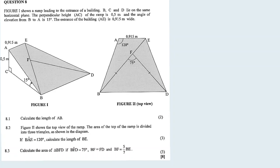So let's look at question 8. Figure 1 shows a ramp leading to the entrance of a building. B, C, and D lie on the same horizontal plane. The perpendicular height AC of the ramp is 0.5 meters, and the angle of elevation from B to A is 15 degrees. The entrance of the building is 0.915 meters wide.